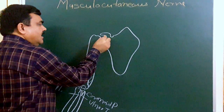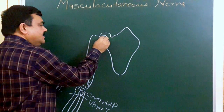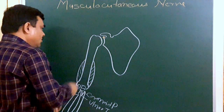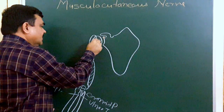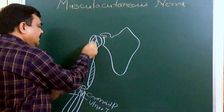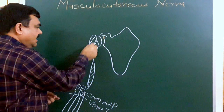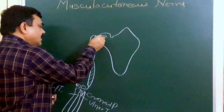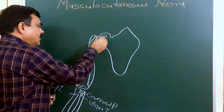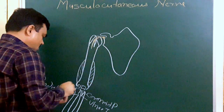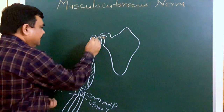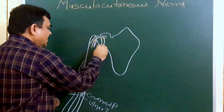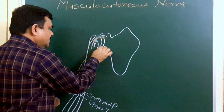This is the supraglenoid tubercle. One muscle takes origin from the supraglenoid tubercle. Here is the lesser tubercle. This is the bicipital groove. Here is the long head of biceps, which is intracapsular. This is the capsule of the shoulder joint.